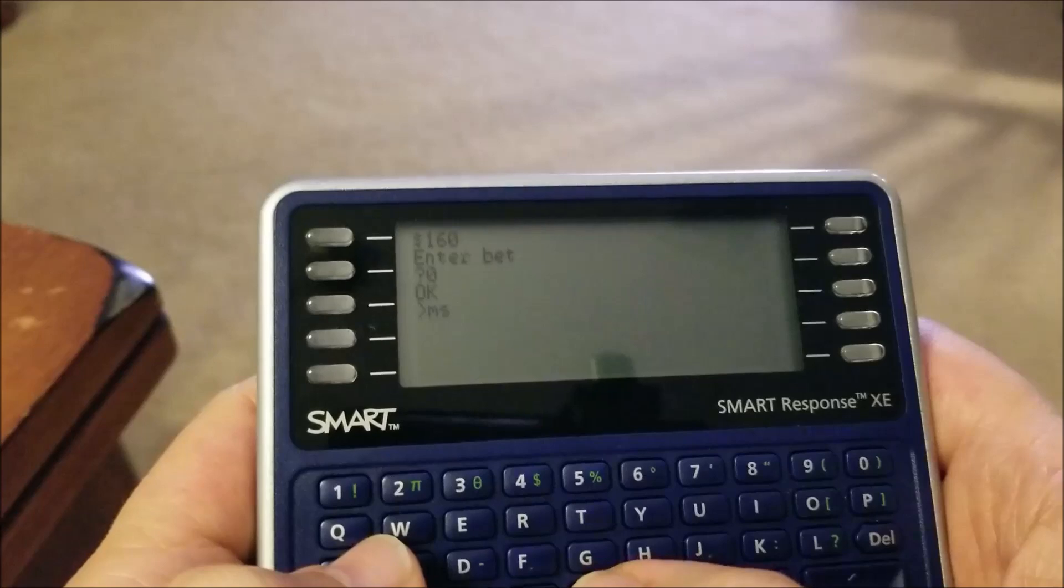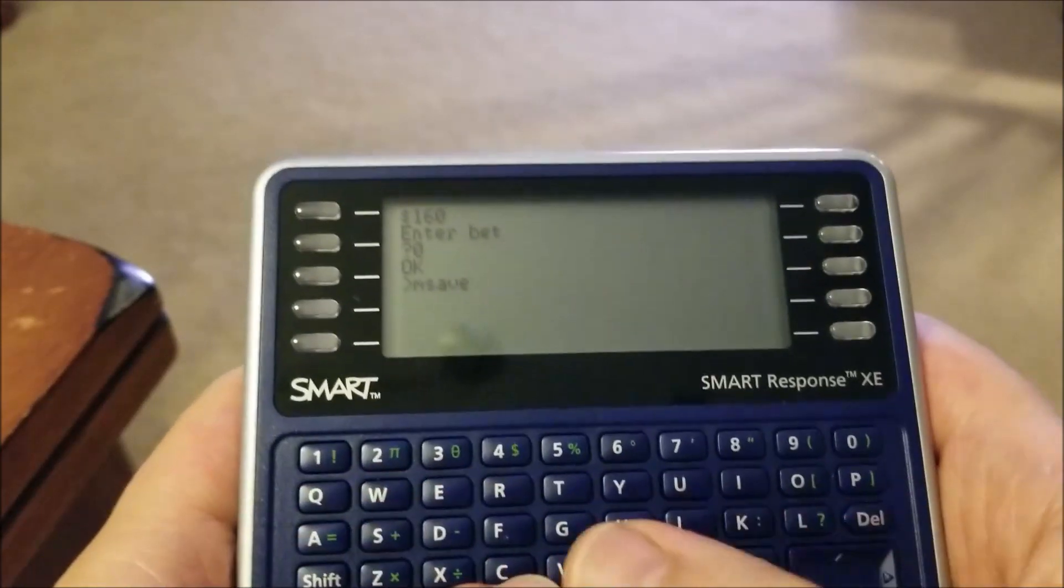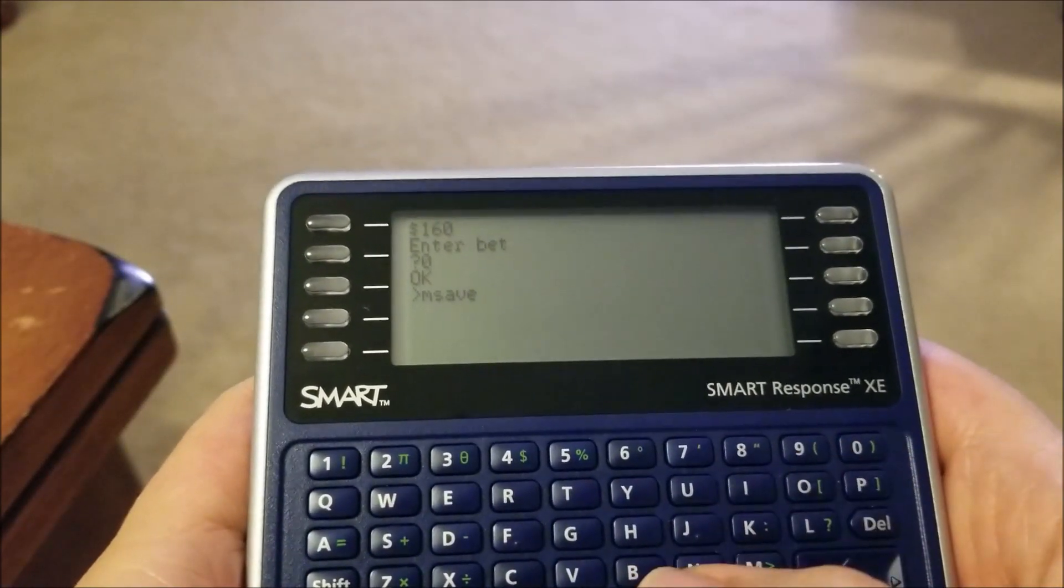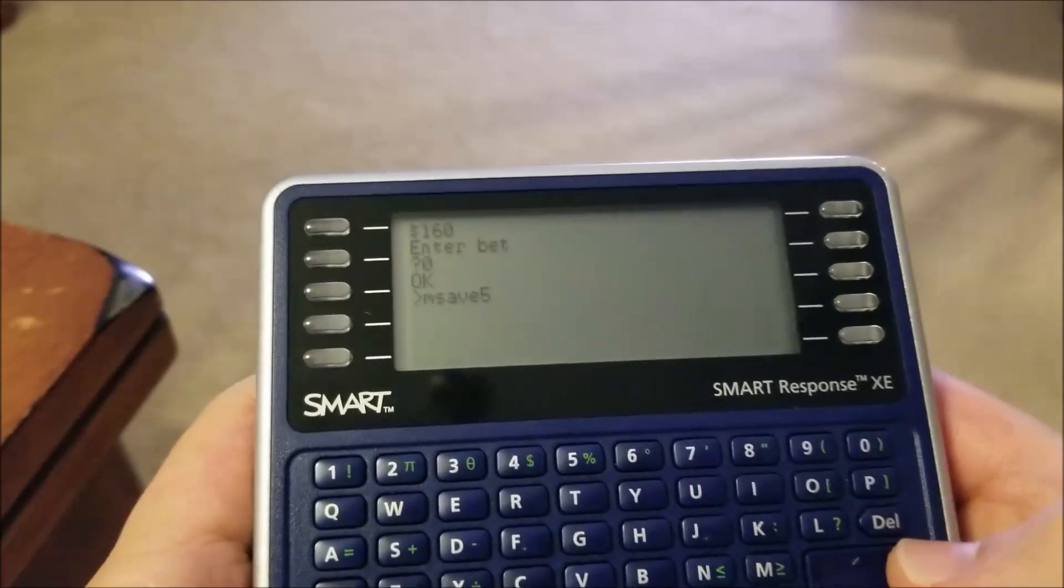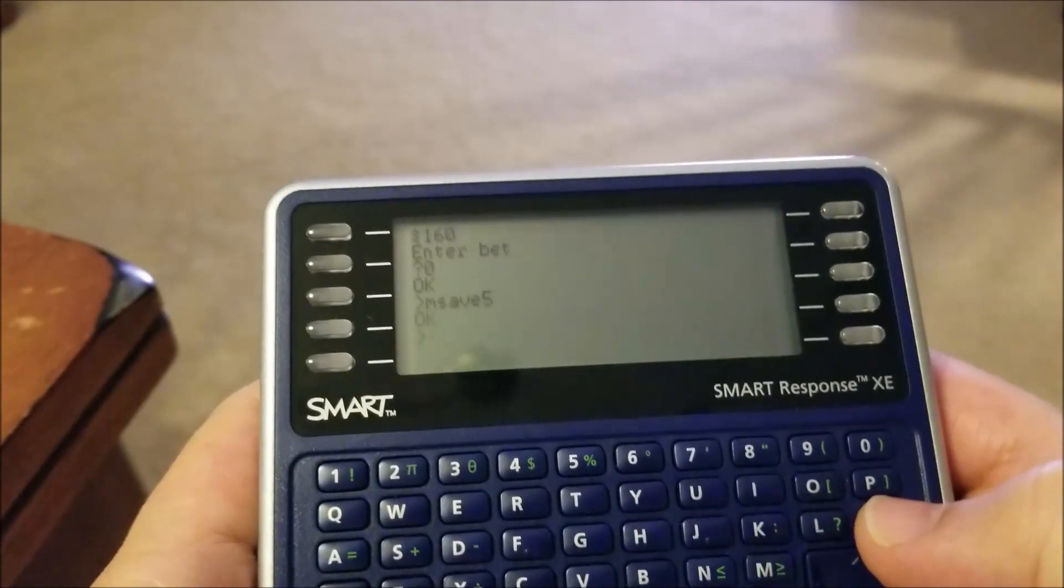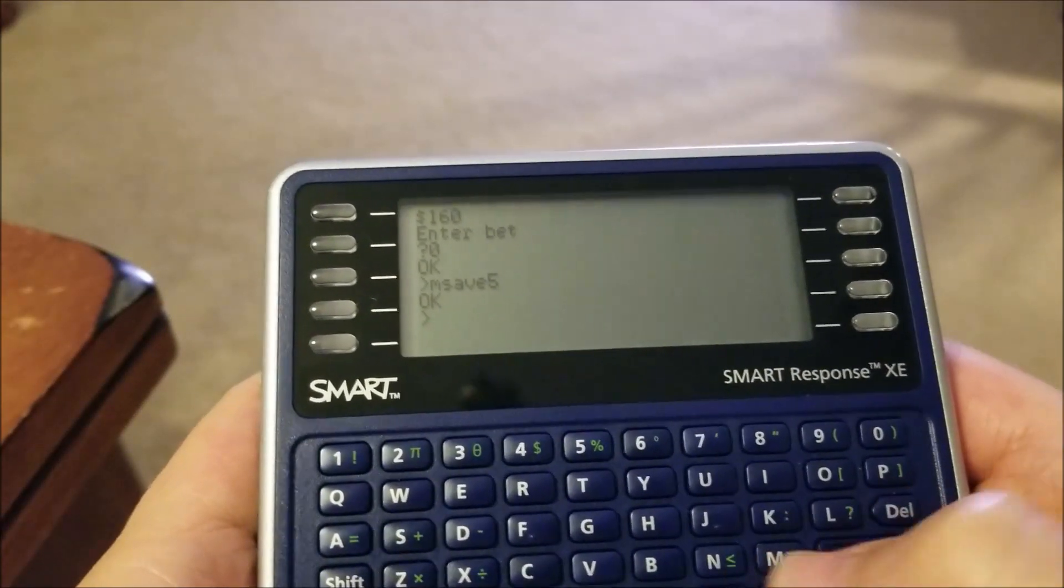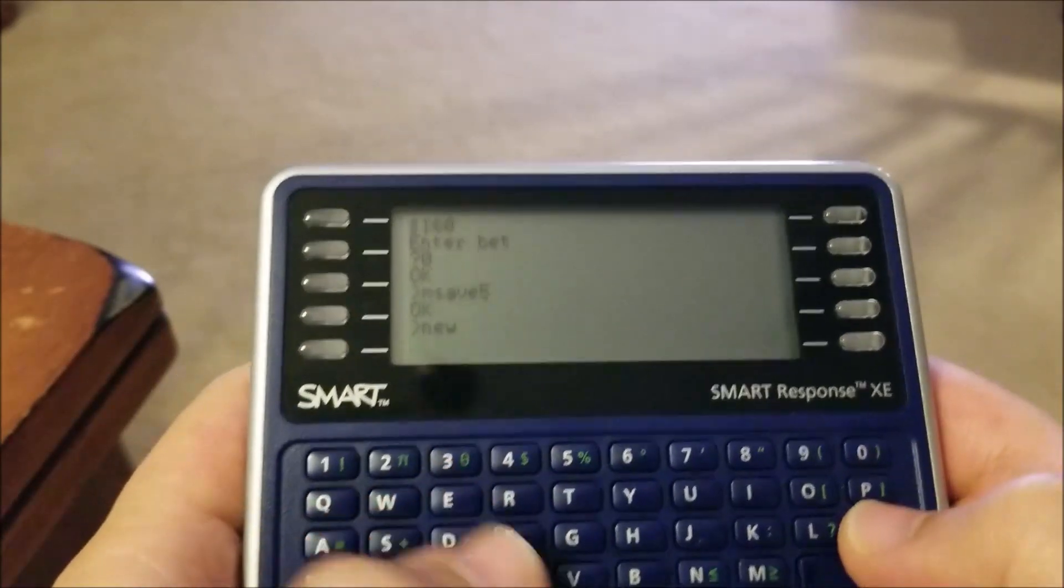If I want to save this now, all I have to do is say MSAVE, and I can pick one from zero to nine, the memory location. So let's save it in slot five. If I hit enter, it goes ahead and saves that. Now I'm going to type NEW so I get a new program.